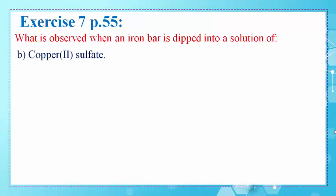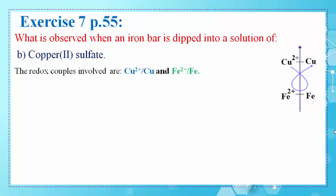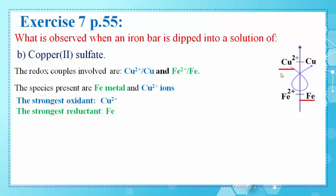In part B, what is observed when an iron bar is dipped into a solution of copper(II) sulfate? The redox couples involved are Cu2+/Cu, due to the presence of the copper(II) sulfate solution, and Fe2+/Fe, due to the presence of the iron bar. We classify these two redox couples on an axis. Cu2+ is the strongest oxidant and Fe is the strongest reductant. According to gamma rule, a spontaneous reaction takes place between the strongest oxidant, Cu2+, and the strongest reductant, Fe, to give Fe2+ and Cu.